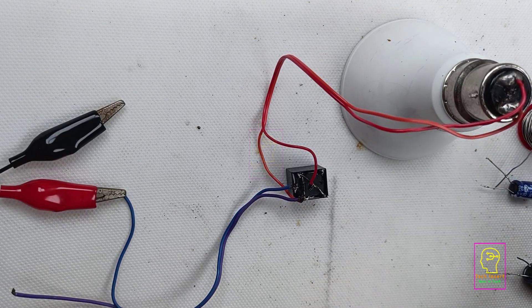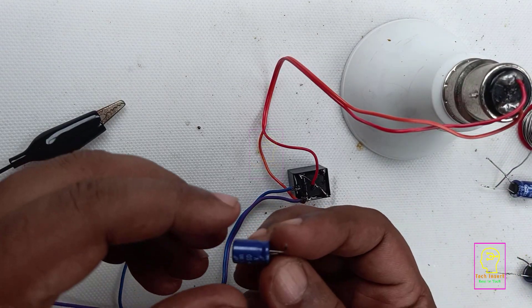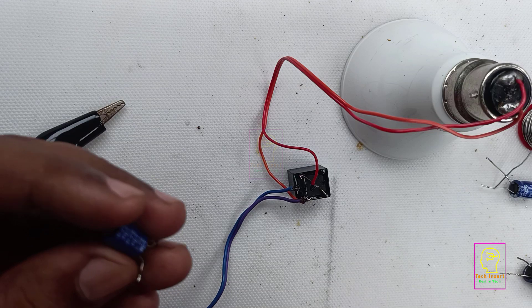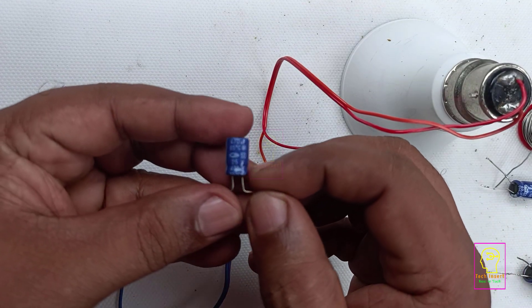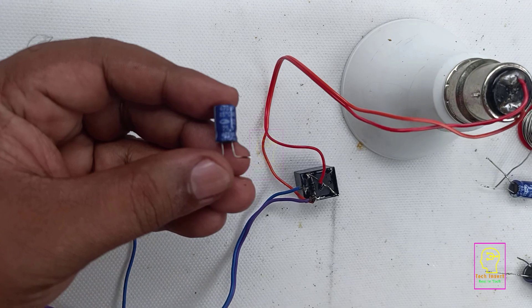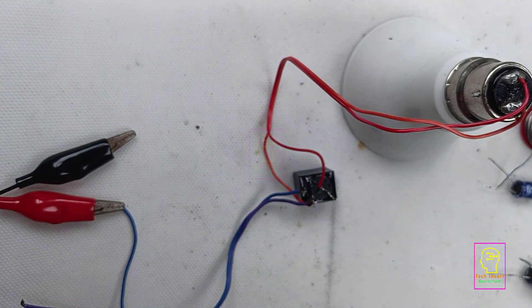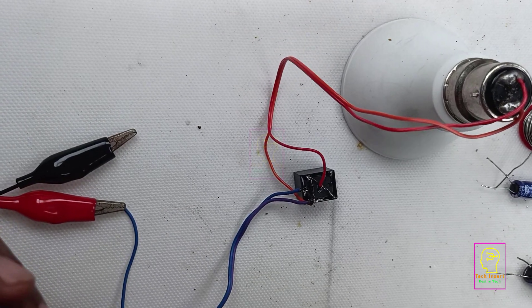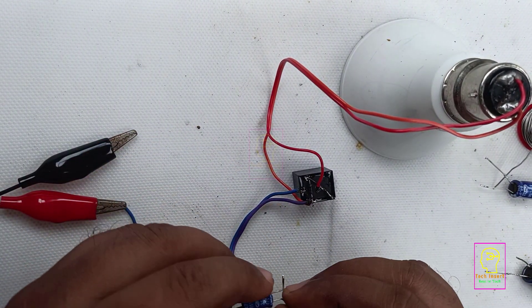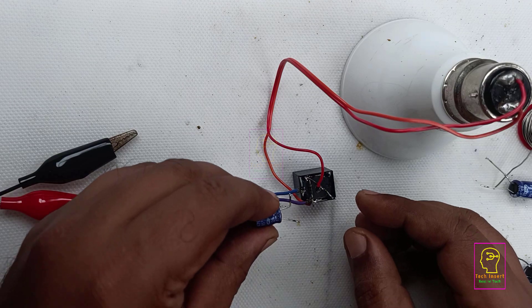We will connect this 470 microfarad capacitor across the coil. So when the coil gets disconnected from the positive supply, this capacitor discharges and keeps the coil energized for some time. When the capacitor discharges completely, then the coil gets de-energized.